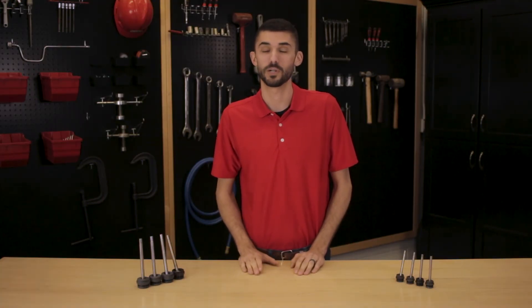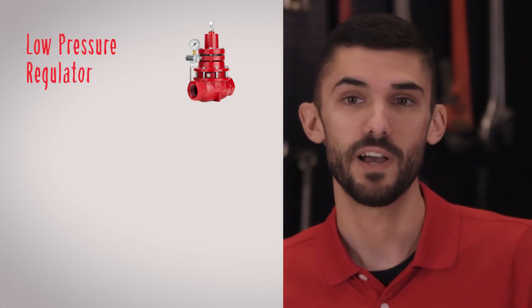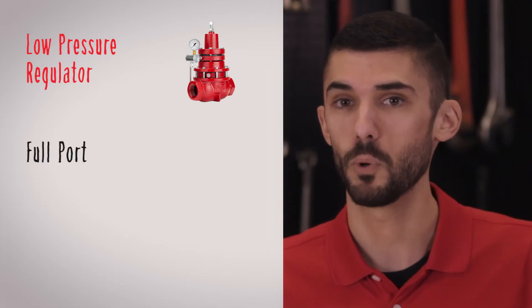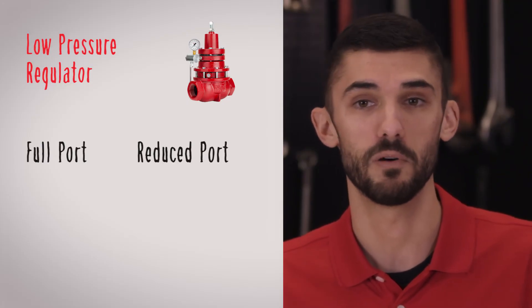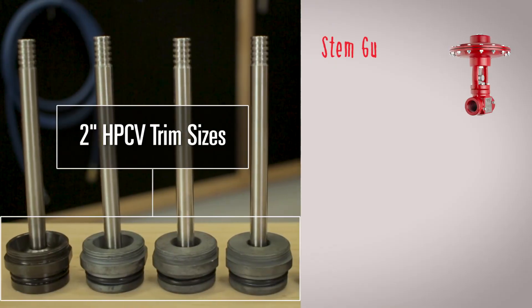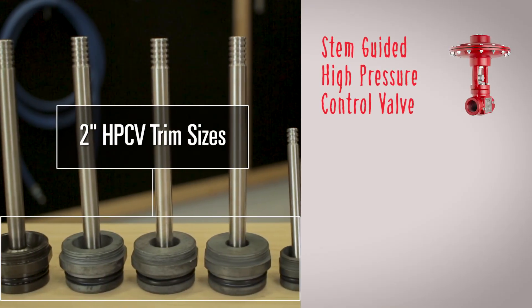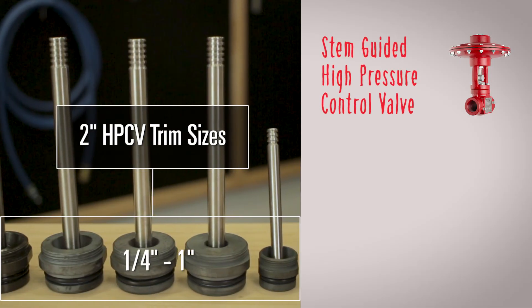This may sound counter-intuitive to use a high pressure control valve for a low pressure application, but let me explain. Our low pressure valves and regulators come with two trim options — full port or reduced port — and it might be too big for your small flow rates. Kimray 2-inch stem-guided high pressure control valves come with nine different trim options, ranging from quarter inch up to one inch.